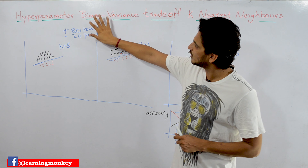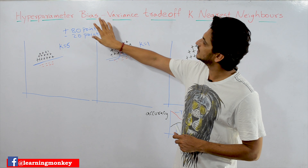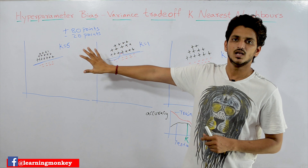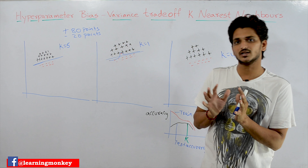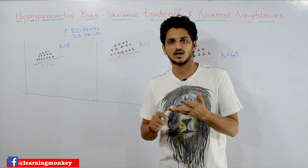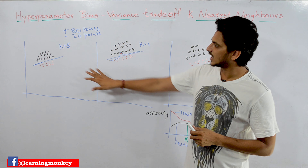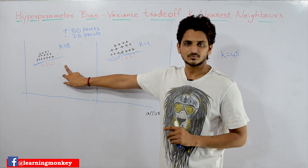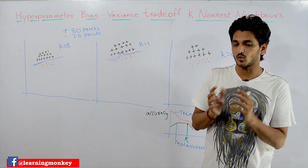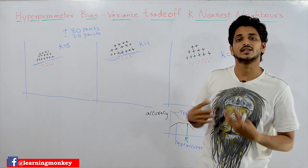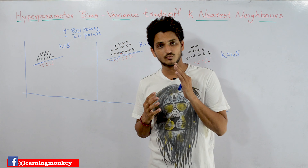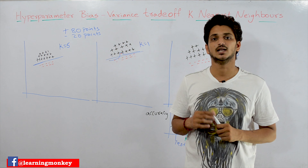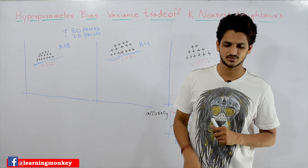So how does our model move between underfitting and overfitting? Let's understand that with an example. For understanding of this class, we need a solid understanding of overfitting, underfitting, and the decision surface in K-nearest neighbors, which we discussed in our last class. These concepts are very important. Our assumption here is that you have already watched all those classes. Please follow our playlist for better understanding — the link is provided in the description below.